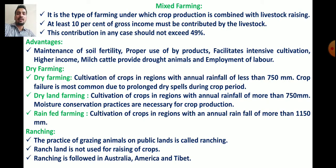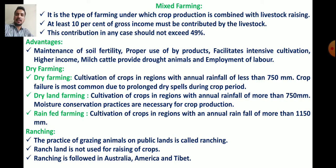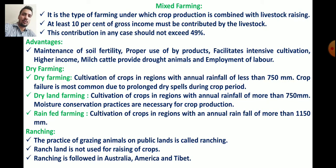Dryland farming is cultivation of crops in regions receiving rainfall more than 750 mm, where moisture conservation practices are necessary for crop production. Rain-fed farming is the cultivation of crops in regions receiving annual rainfall more than 1150 mm.